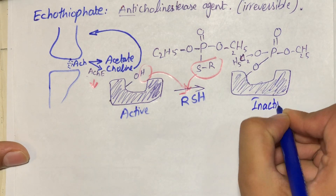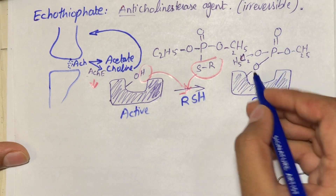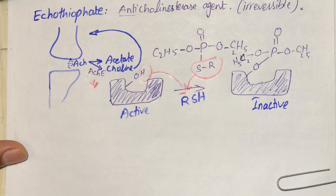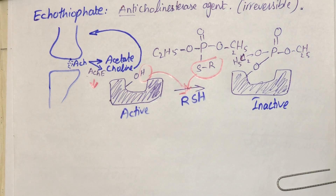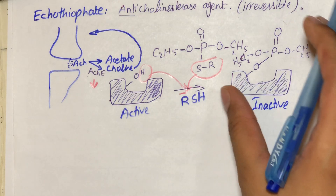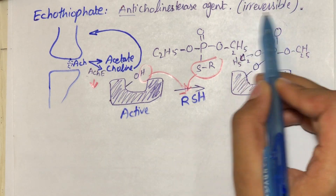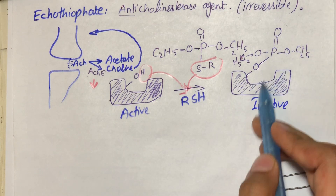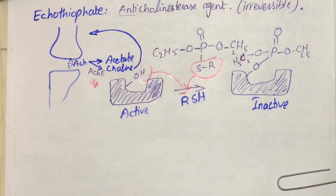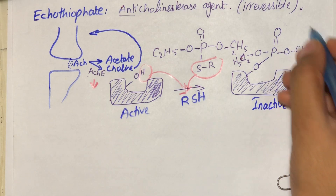The enzyme, which was previously active, is now permanently inactivated by the formation of this covalent bond. Restoration of acetylcholinesterase activity requires the synthesis of new enzyme molecules, which means the enzyme will not be reactivated under any normal condition because it is irreversibly bound.